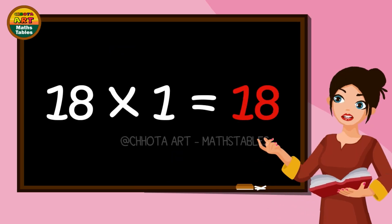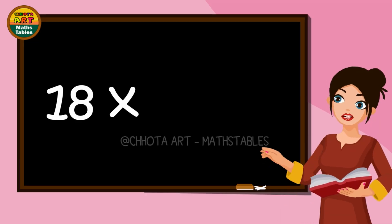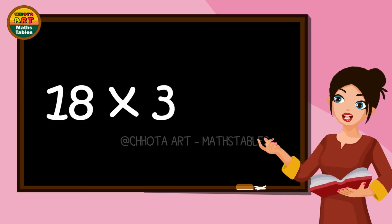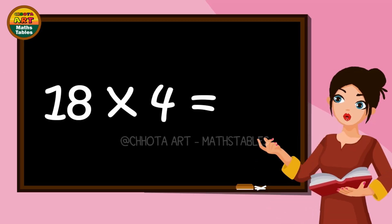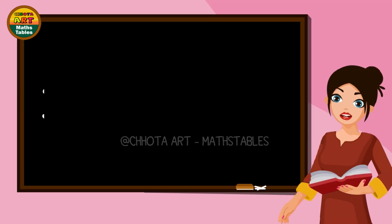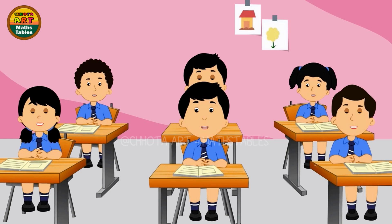18 ones are 18. 18 twos are 36. 18 threes are 54. 18 fours are 72. 18 fives are 90.